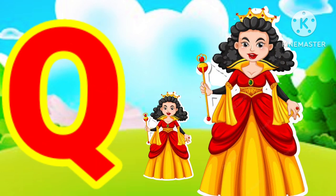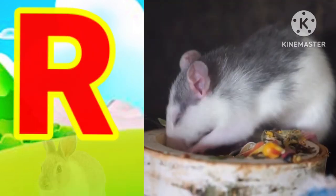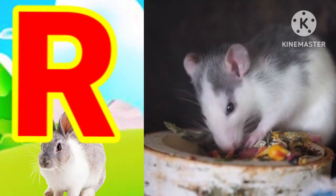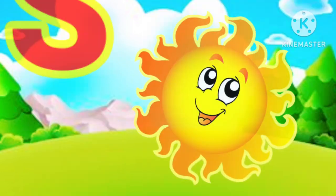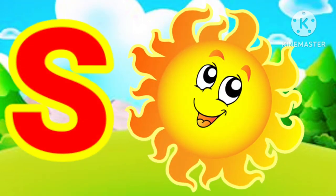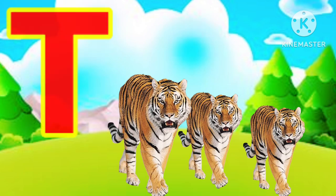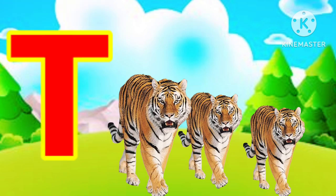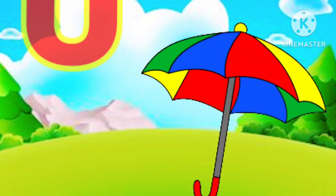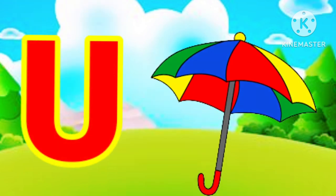Q for queen, R for left, S for sun, T for tiger, U for umbrella.